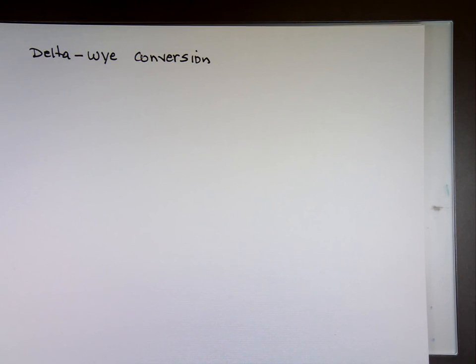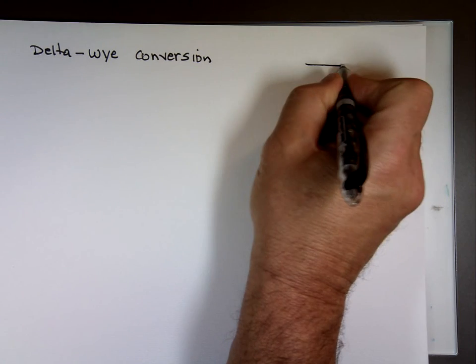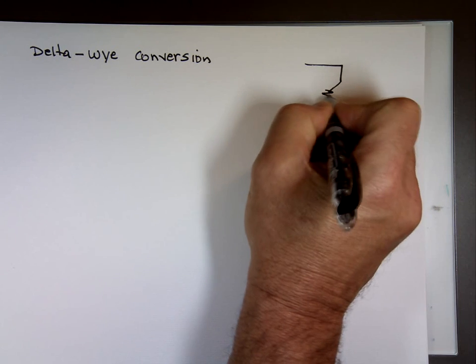Sometimes you encounter an ugly circuit. What am I going to do with this? So you might see a circuit that looks like this. And you go, how am I going to handle that?